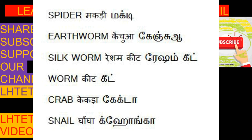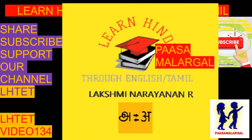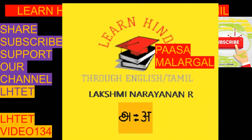Crab is Keekda. Snail is called Kenchua. So far we have seen more or less 20 insect and living things names. We will continue the same in the next video too. Namaste.